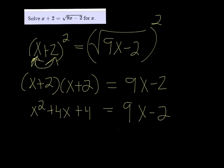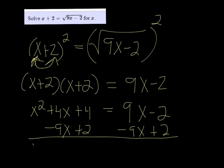Since we have a quadratic, we want to add the 2 over and subtract the 9x from both sides so that we have one side equal to 0. So we get x squared minus 5x plus 6 is equal to 0.